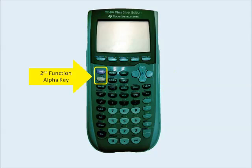Other keys of interest are the blue second function key in the upper left — this is basically a shift key. It allows you to access the functions that appear above the other keys in blue. The green alpha key is located directly below the second function key, and it provides access to the letters and symbols that appear above the keys in white.